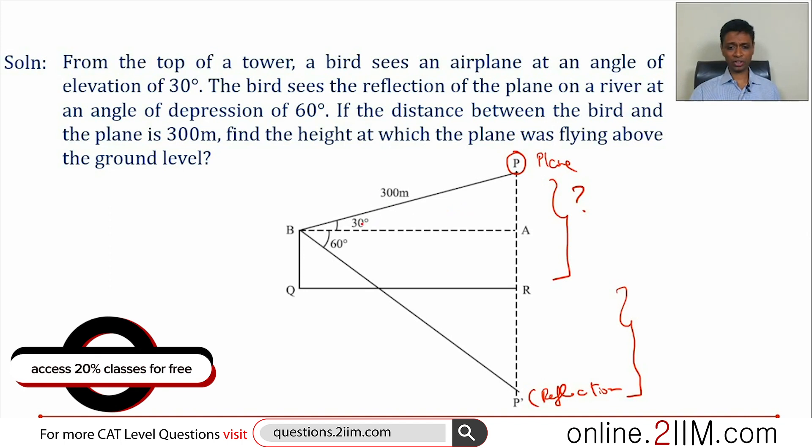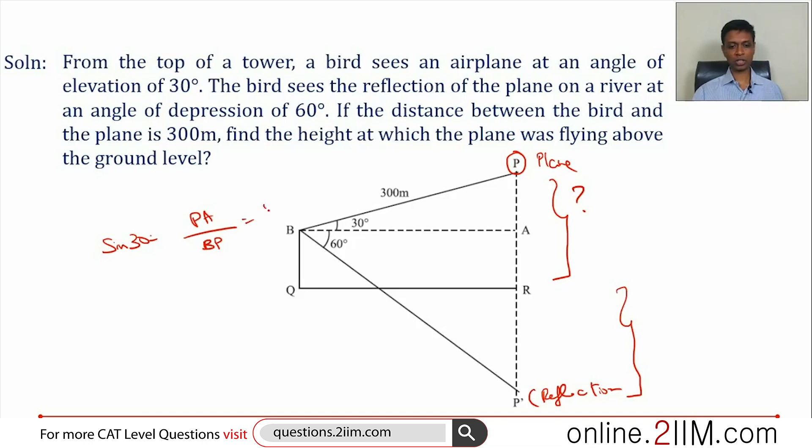This is 30 degrees, the hypotenuse is 300. Fine. Sine 30 is PA by BP. Sine 30 is 1 by 2. BP is 300. PA by 300 is 1 by 2, or PA is 150. This distance is 150.